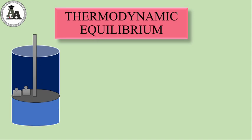Suppose this piston is motionless — it is not doing any motion. So this gas, which is our system, when the piston is constant and motionless, is gais ka apna pressure hoga, apna volume hoga aur apna temperature hoga. These are called state functions. So this is the initial state of the system.